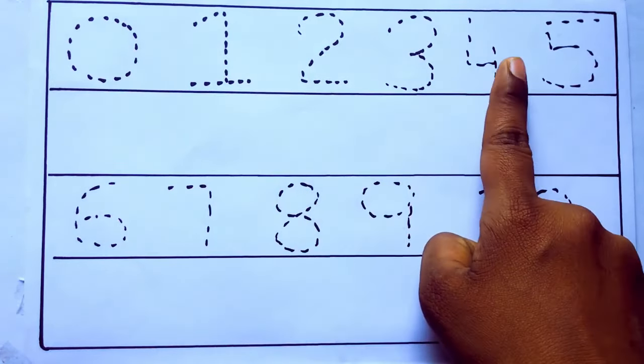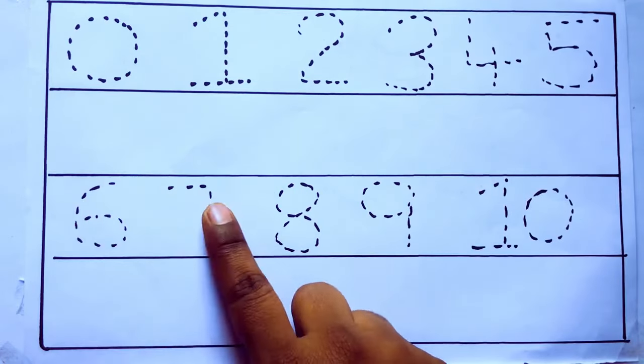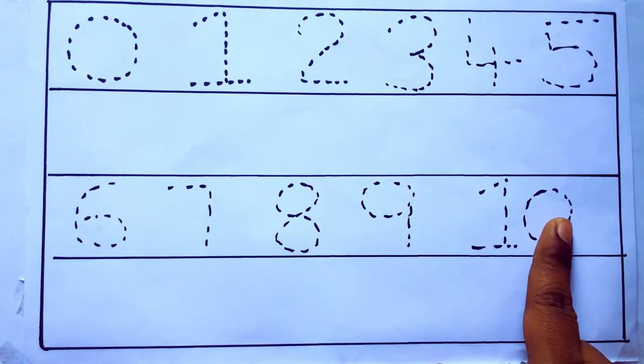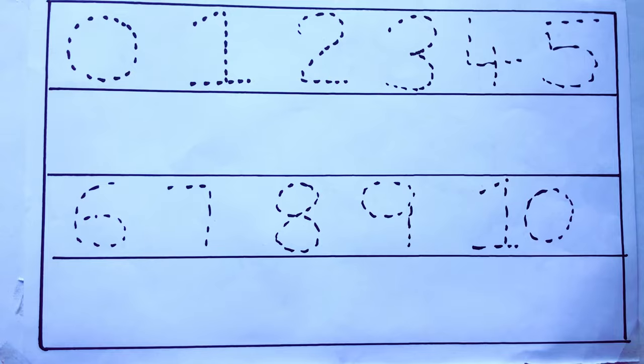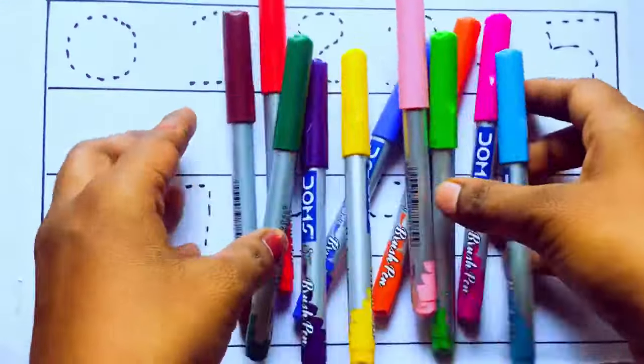0, 1, 2, 3, 4, 5, 6, 7, 8, 9, 10, and rewriting the numbers. Let's learn some colors. These are